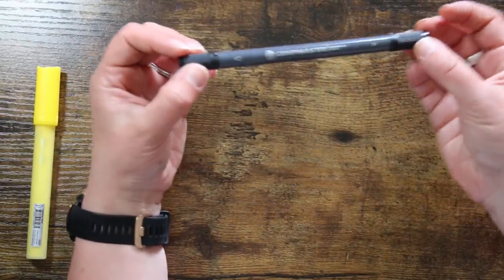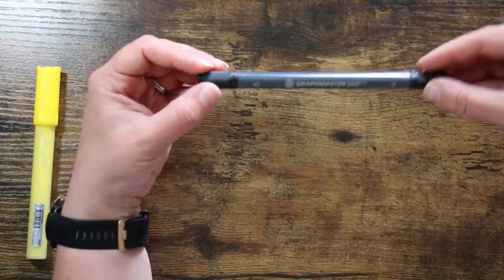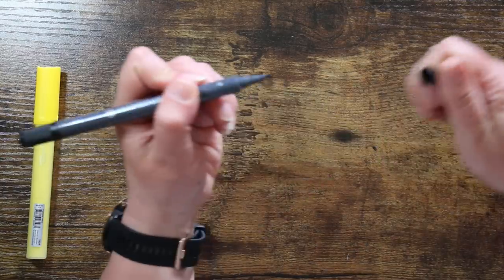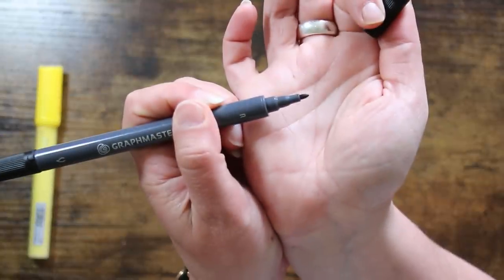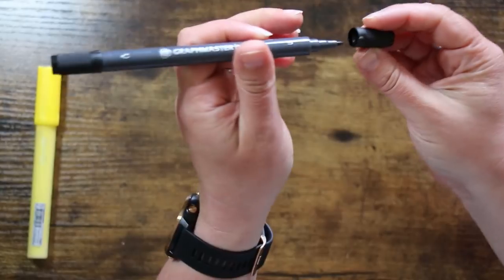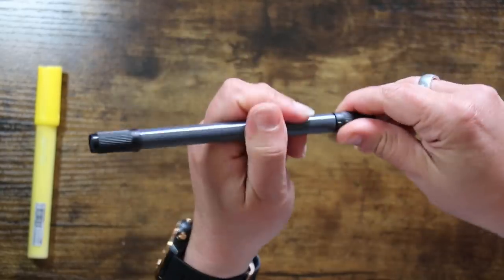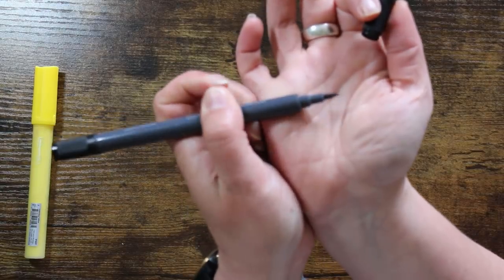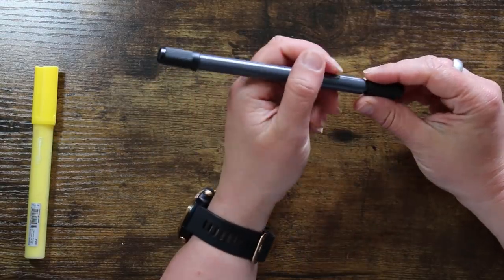Graphmaster is a brand that Upcrate have kind of stuck with from the beginning. Apparently Clemens Rooson who is the man who is the brainchild of Upcrate used to work for Graphmaster and I think they supported him quite a lot at the beginning because one of the first boxes was Graphmaster products. So I'm not surprised to see one of these in here. They are really good quality items. I enjoyed the markers very much despite not being much of a marker person.